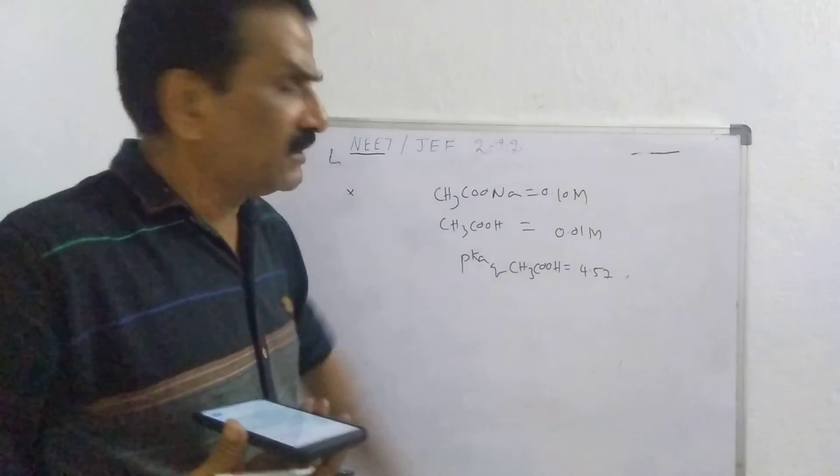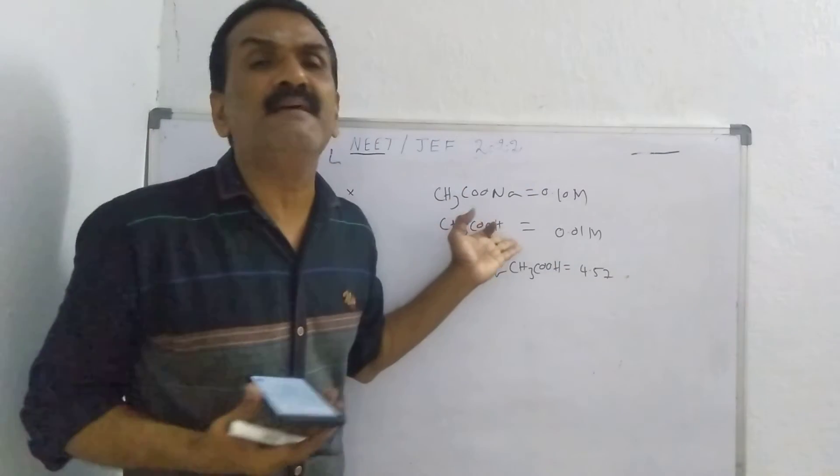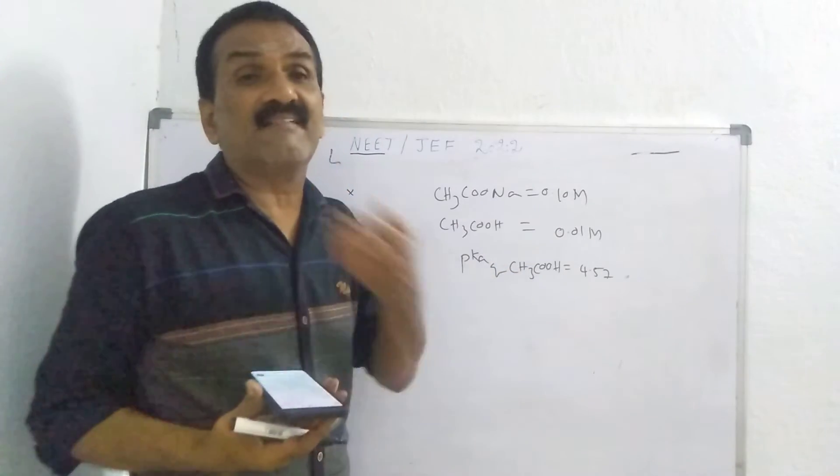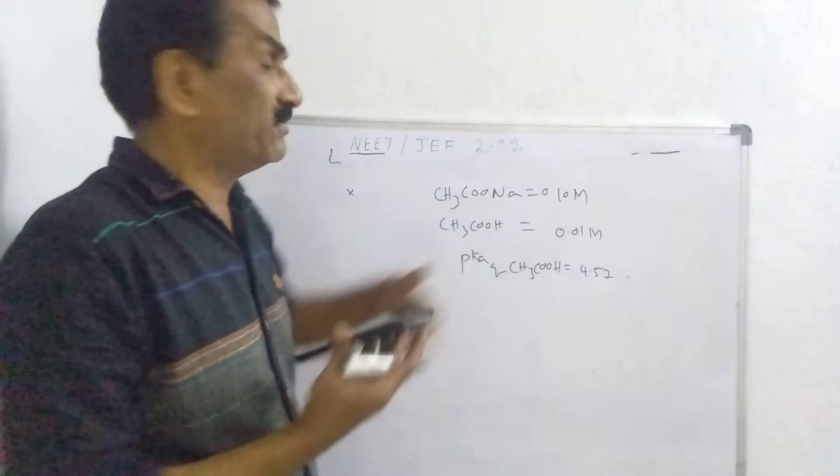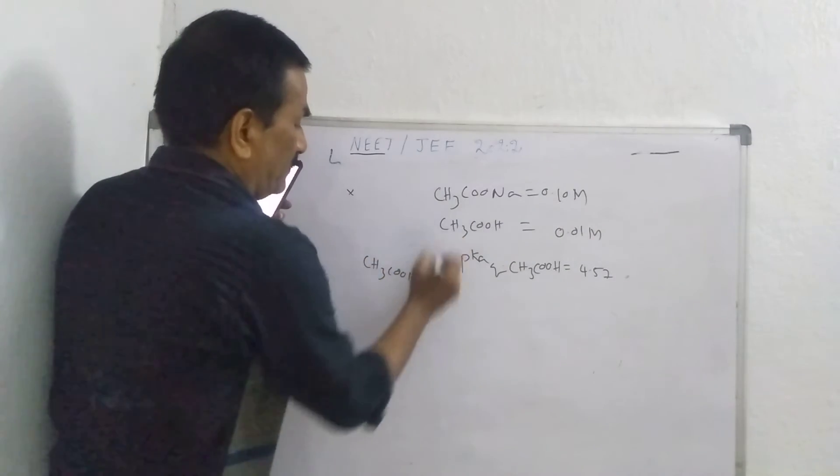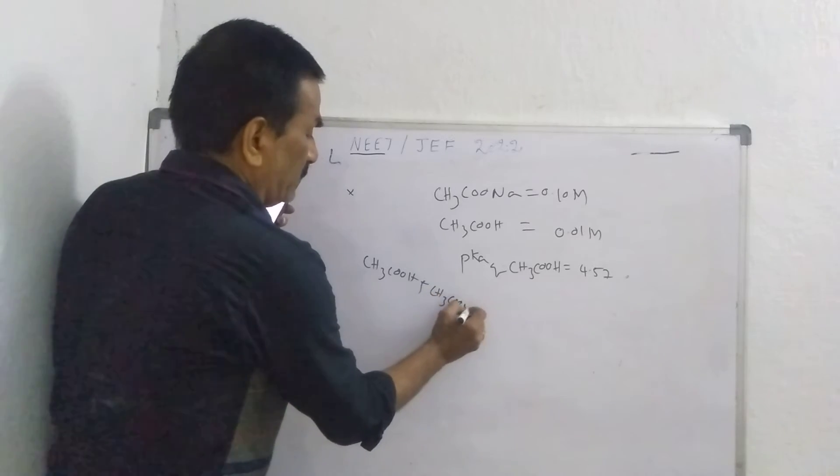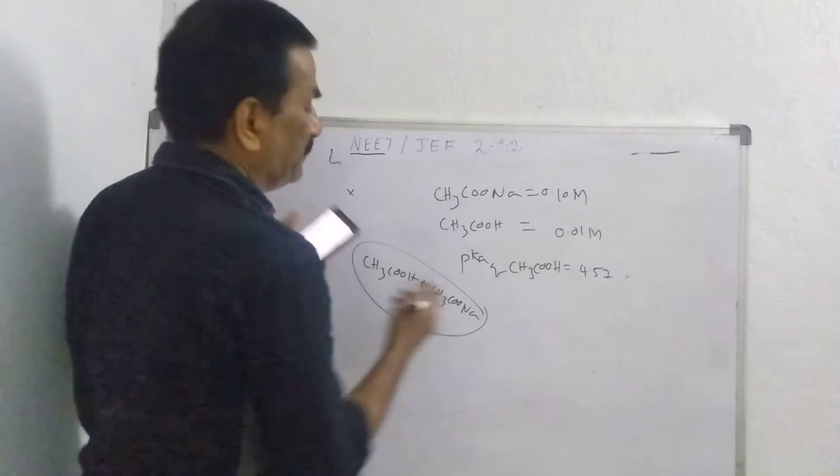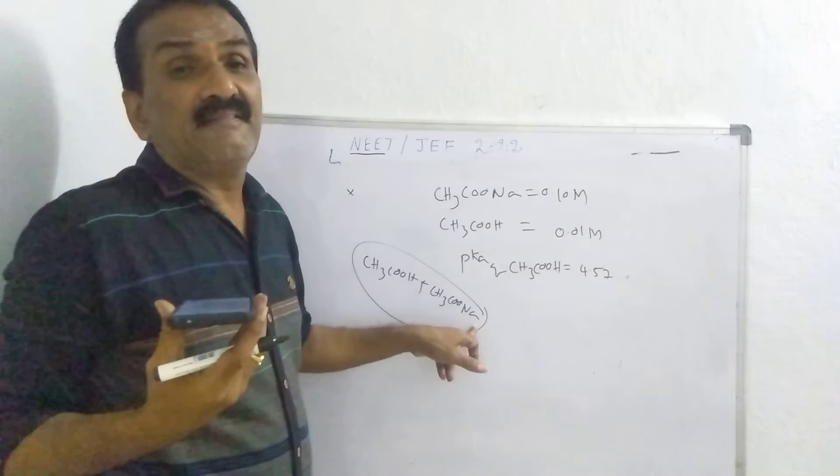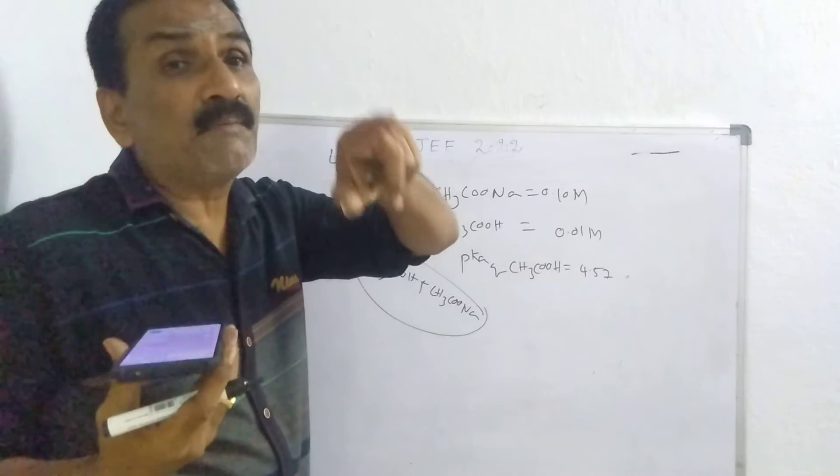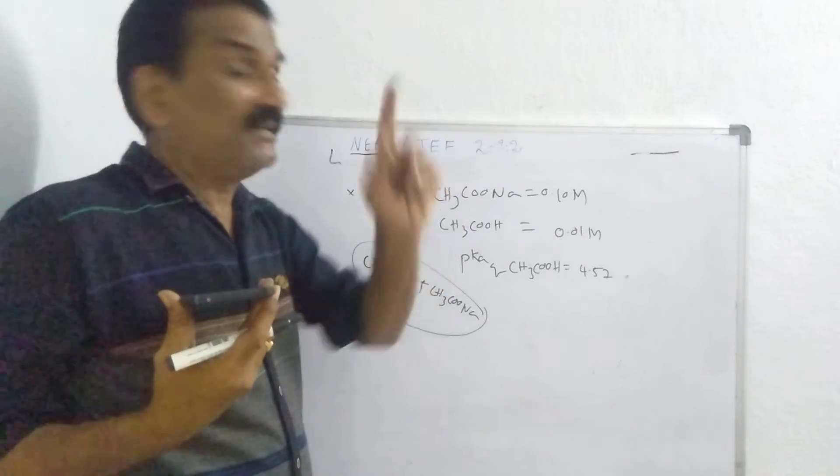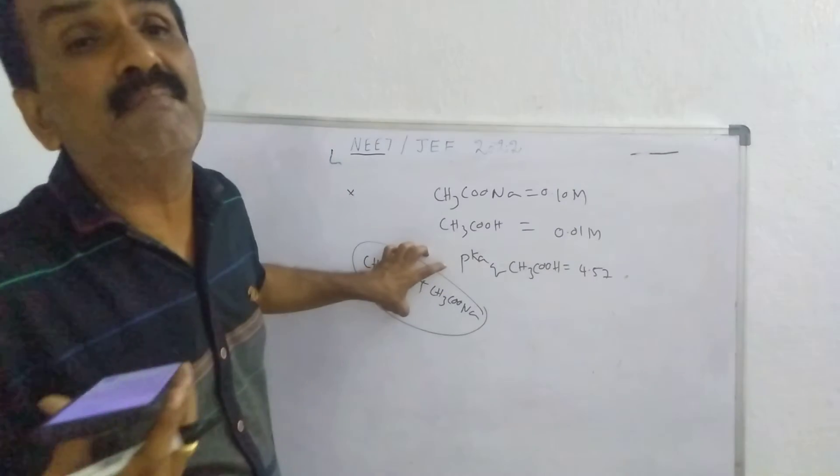If you observe this problem very keenly, this is nothing but acetic buffer, weak acid, that is acetic acid, and salt with a strong base, this is the sodium acetate. So CH3COOH plus CH3COONa, this is nothing but acetic buffer. Acetic buffer means acetic acid, weak acid, and acetic acid reacts with a strong base. Sodium acetate, weak acid and weak acid with a strong base, that is sodium acetate. The mixture is nothing but acetic buffer.